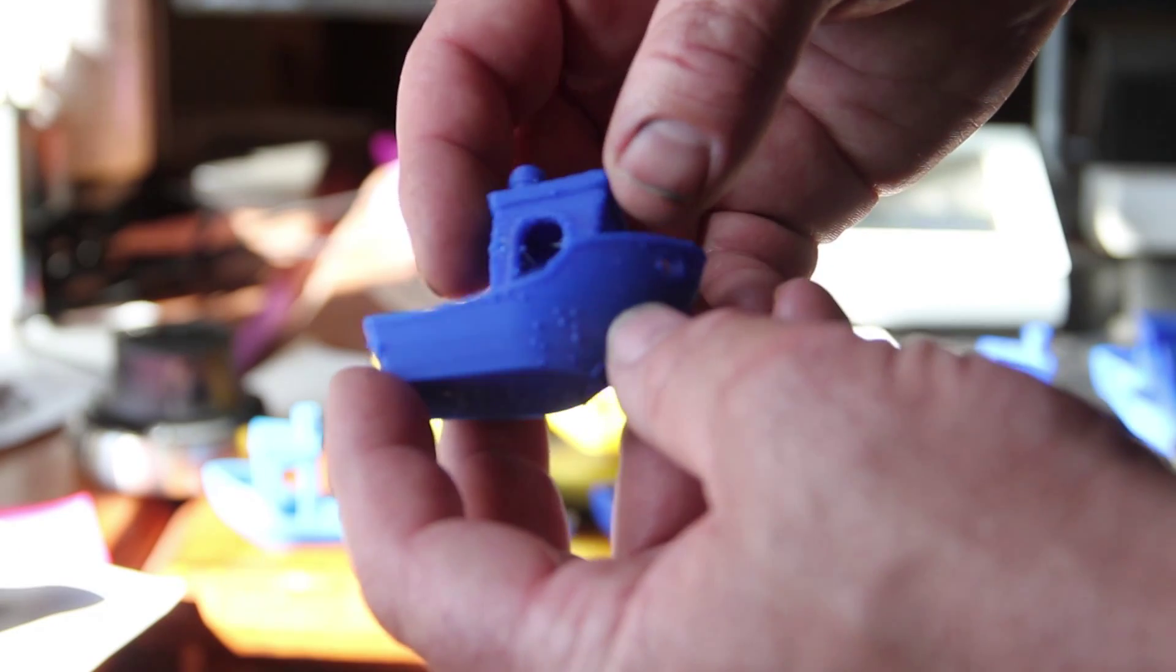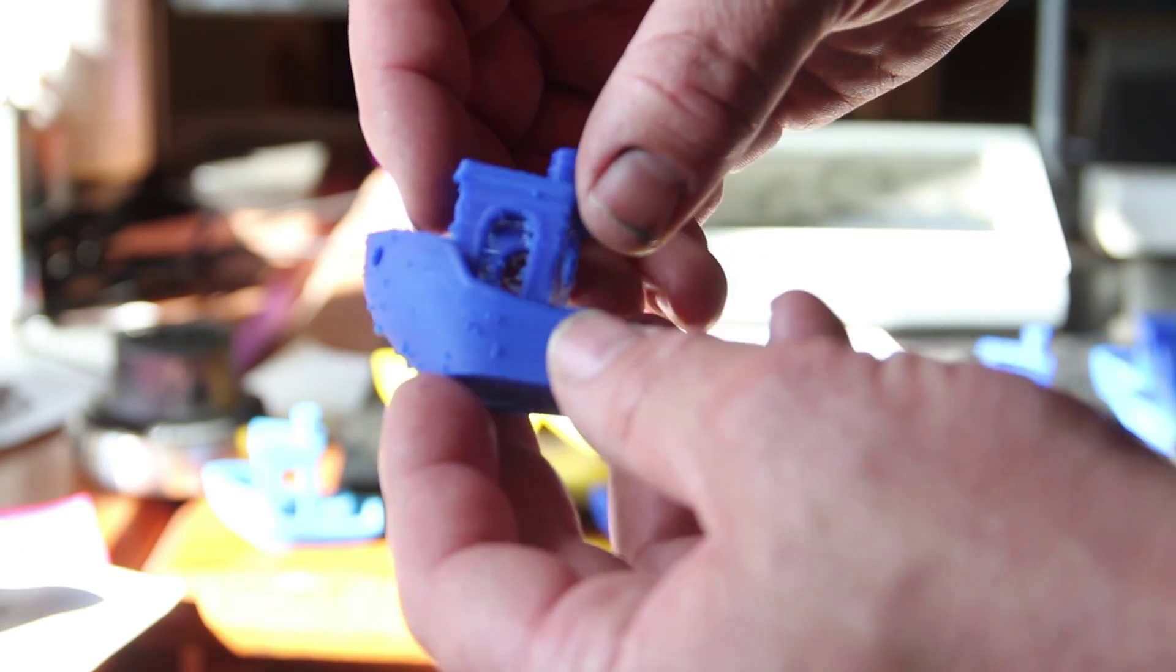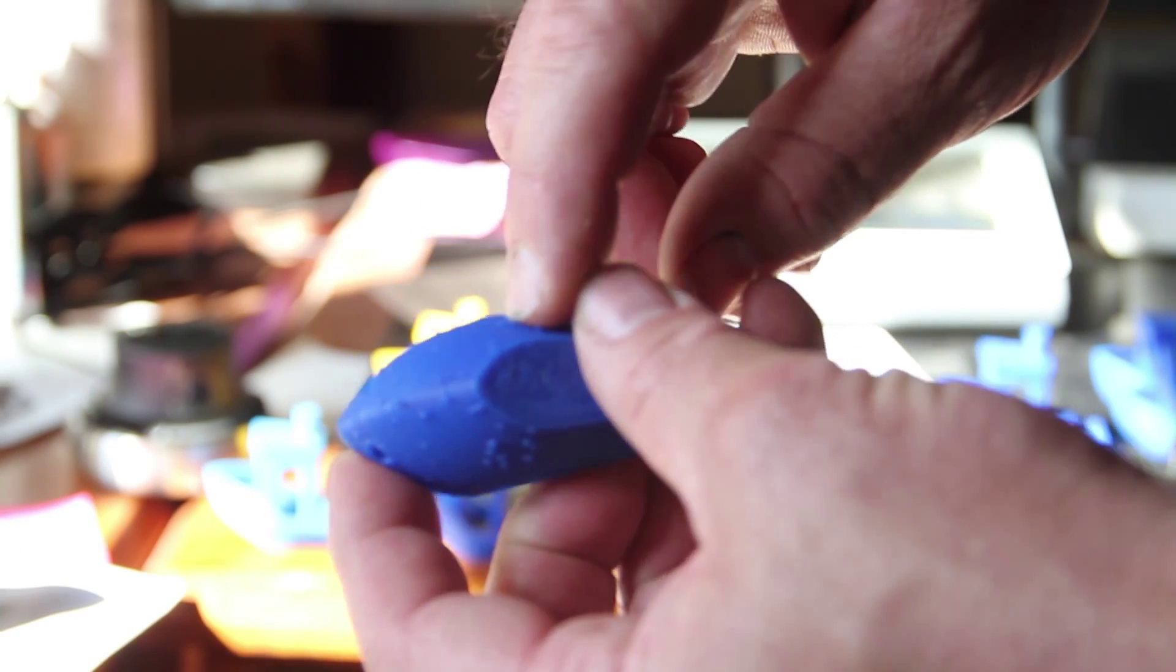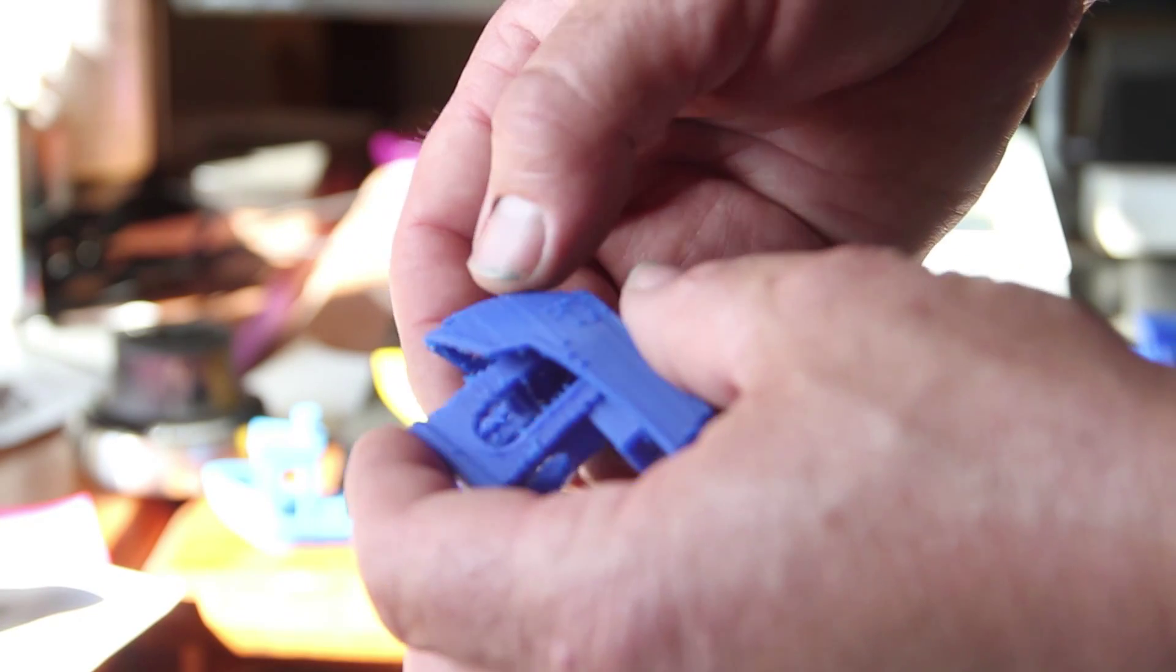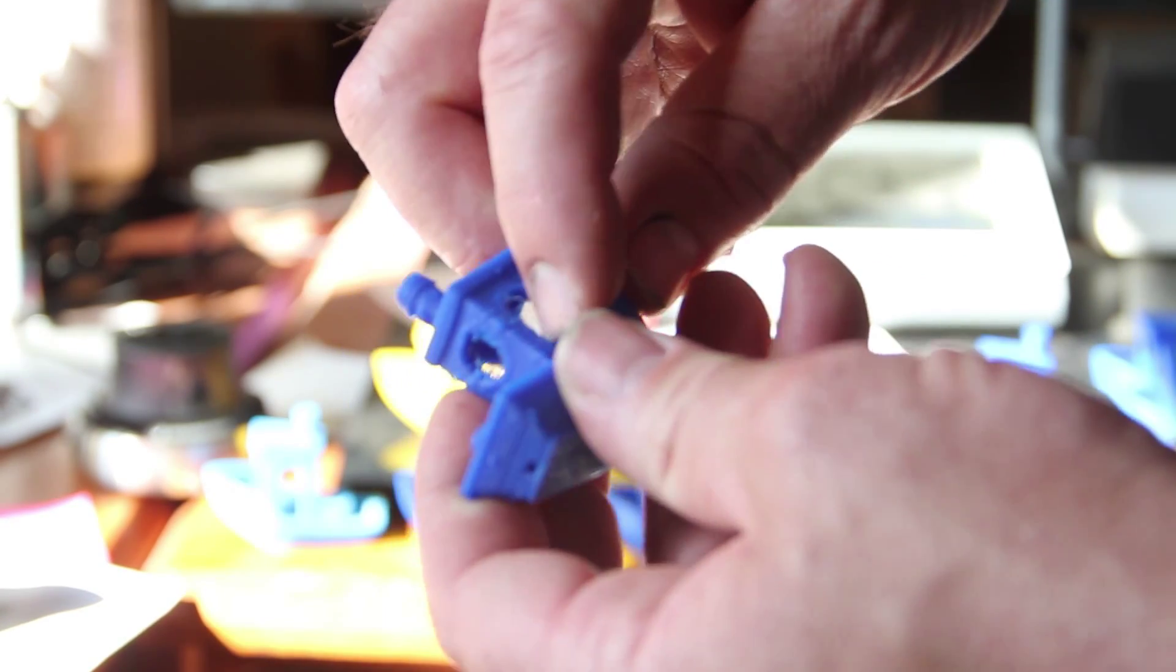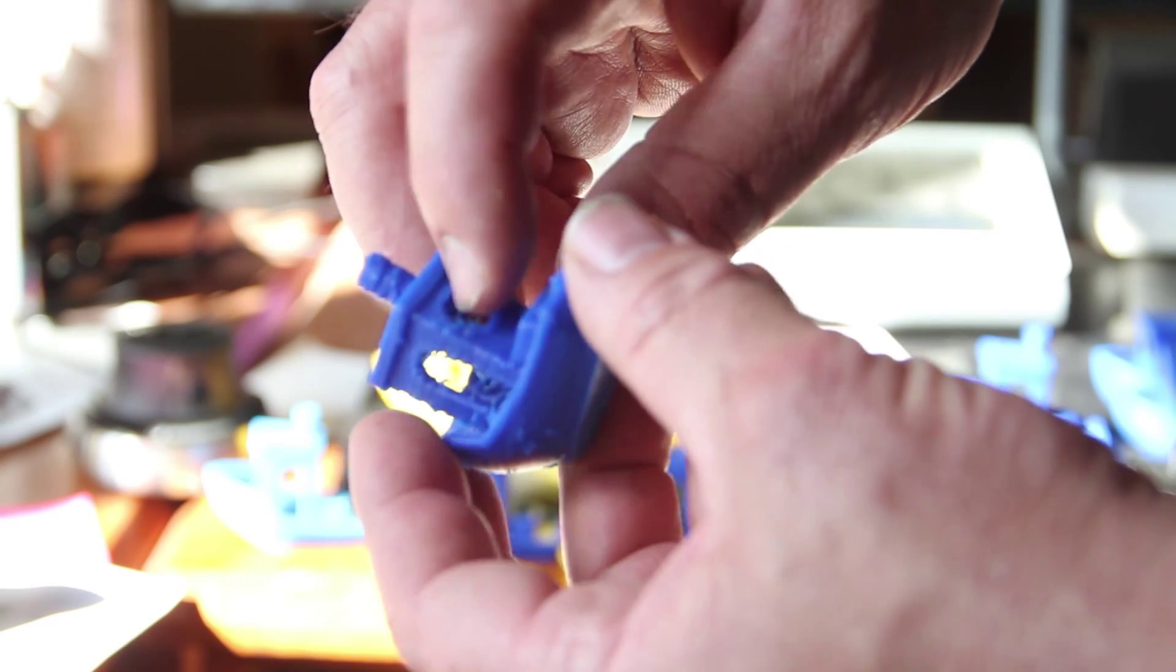This was the first one I printed on the Bowden side. You can see it's got a lot of barnacles. Kind of fitting for a boat. But just severe over extrusion.